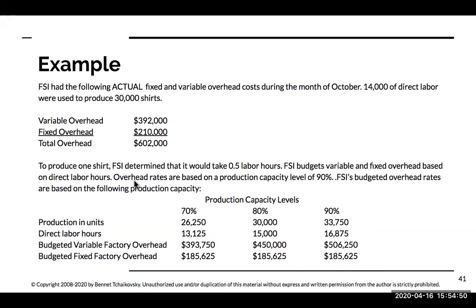The overhead rates are based on a production capacity level of 90%, which will come into play when we look at fixed factory overhead. Here are the budgeted overhead rates: units of production, direct labor hours, budgeted variable factory overhead, and budgeted fixed factory overhead. Because I produced 30,000 shirts, the total standard overhead cost — what I should have paid — is the sum of $450,000 (variable) plus $185,625 (fixed).